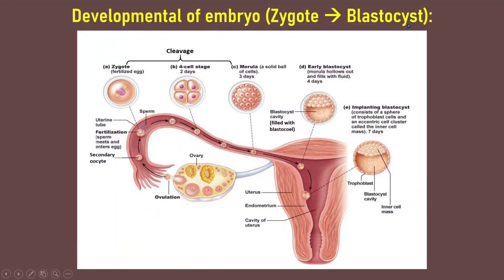The zygote develops into blastocyst inside the fallopian tube. Once fertilization occurs, the zygote undergoes cleavage until a solid ball of cells known as morula is formed — morula is formed 3 days after fertilization. All of this process occurs along the fallopian tube. Morula then develops into blastocyst, which has a sphere of trophoblast cells and a cluster of cells known as inner cell mass. At day 7, the blastocyst is supposed to reach the uterus and implant in the endometrium wall.